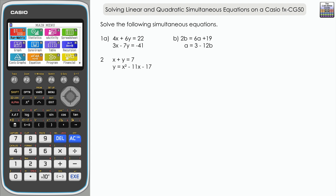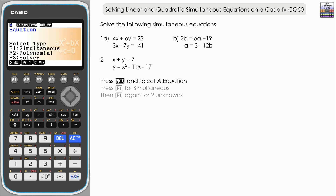From the main menu we're going to use the equation mode for parts a and b in question one, for the linear simultaneous equations. Select equation, and then from the menu here it's F1 for simultaneous.